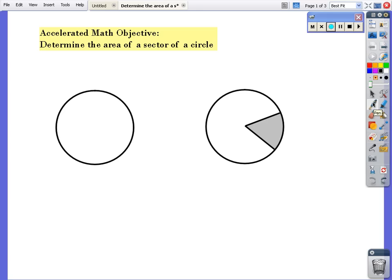Okay, welcome to Accelerated Math. Objective: determine the area of a sector of a circle. First thing I want to do is define a couple of terms. The formula for the area of a circle - some people are going to say 2πr or πd, but that's the circumference, the distance around. The area of a circle is measured in squares and it's πr².